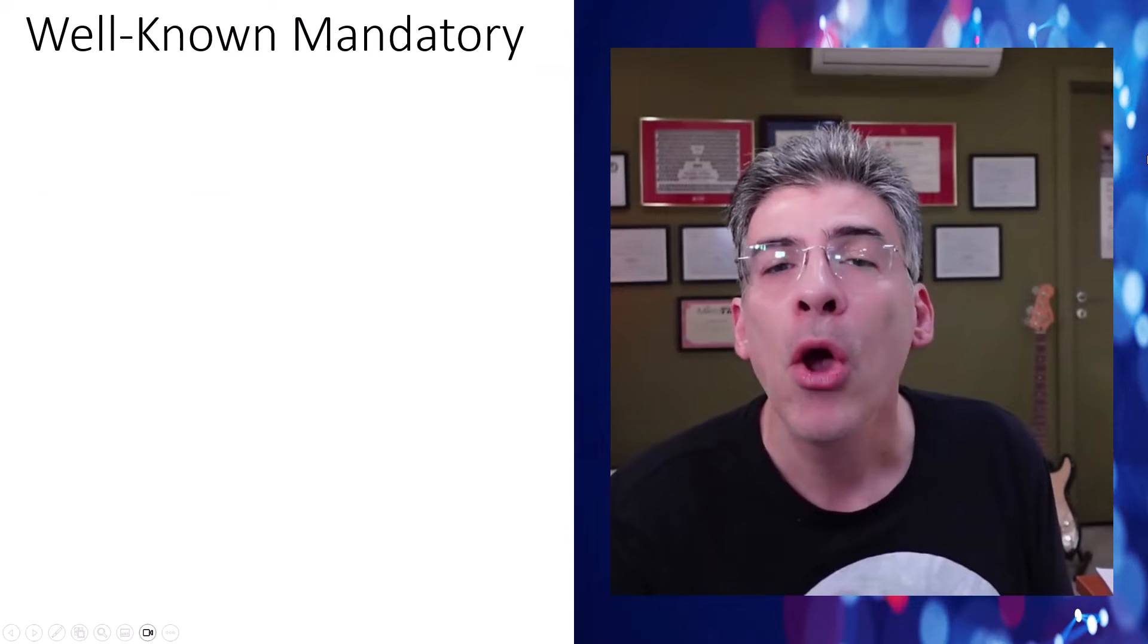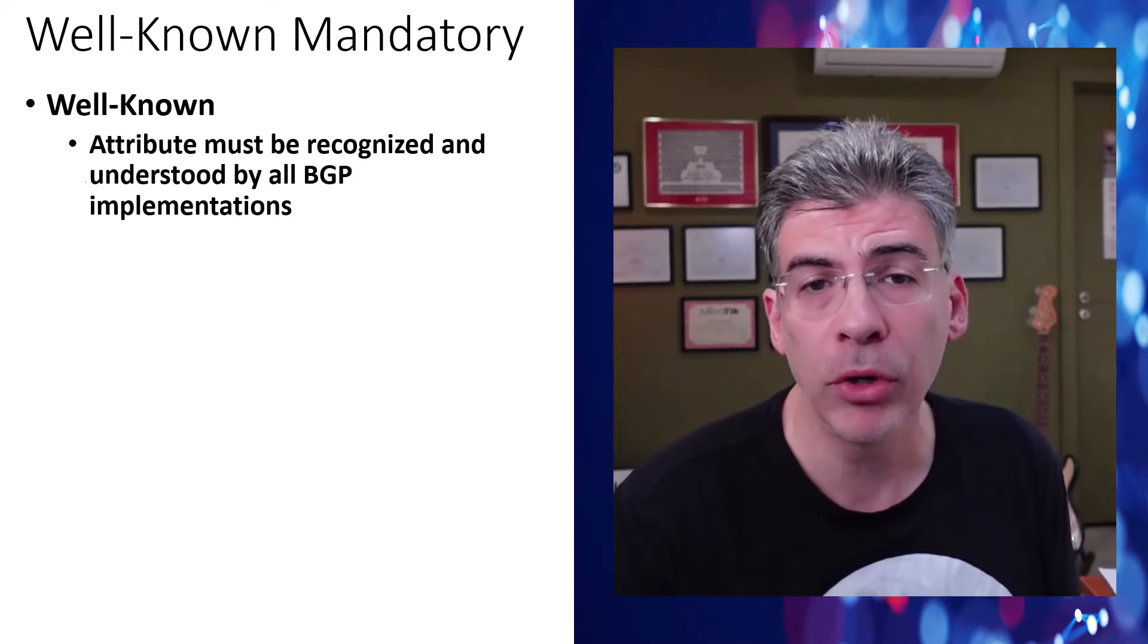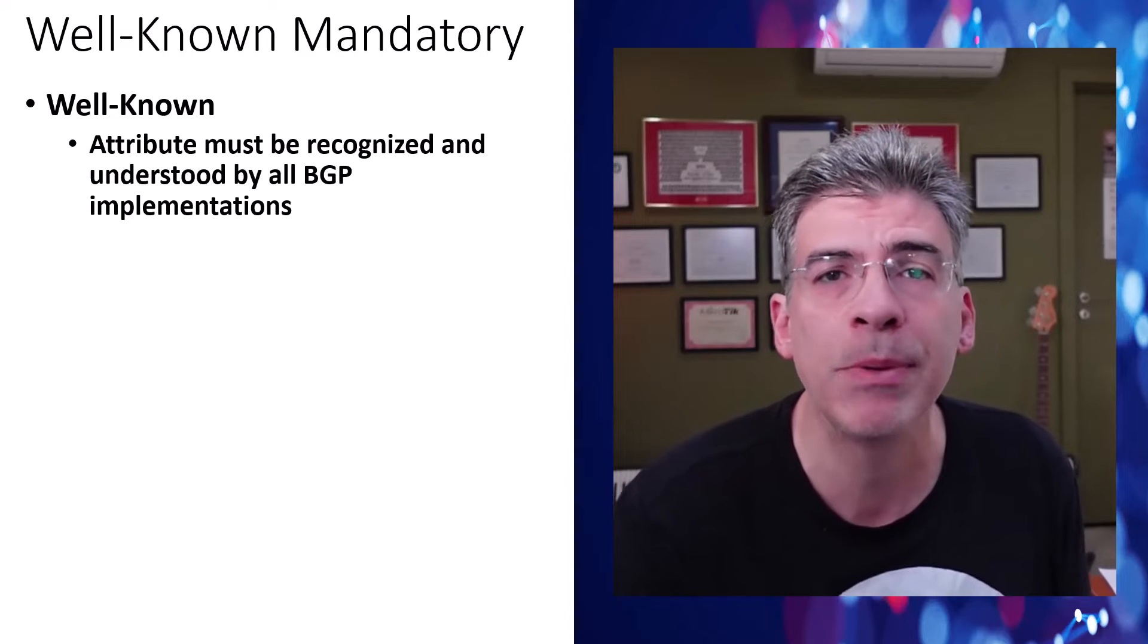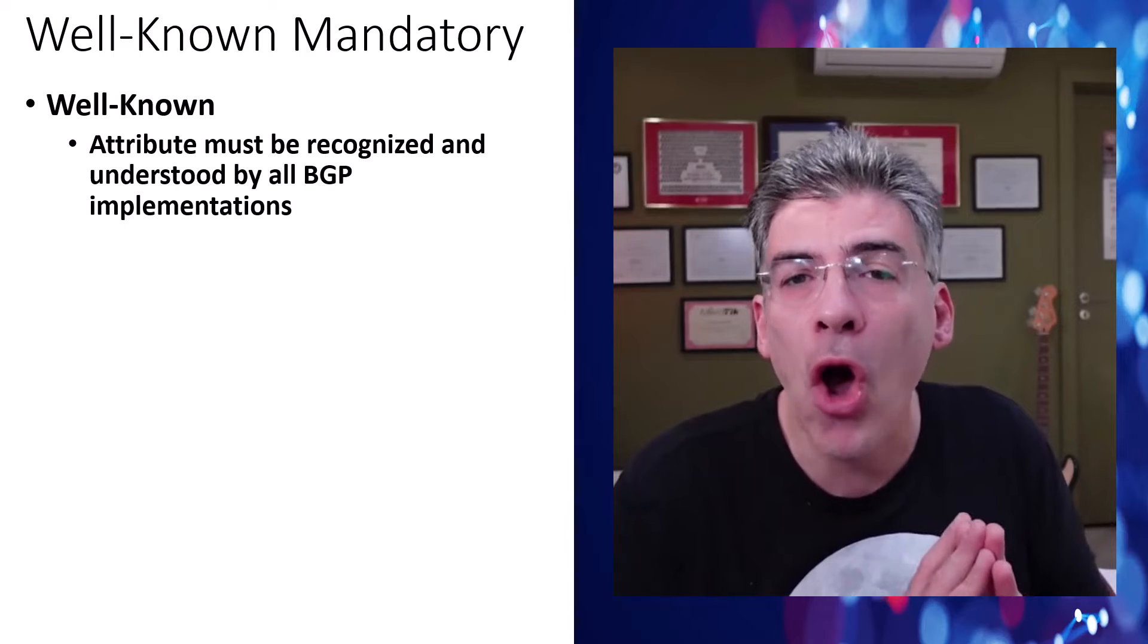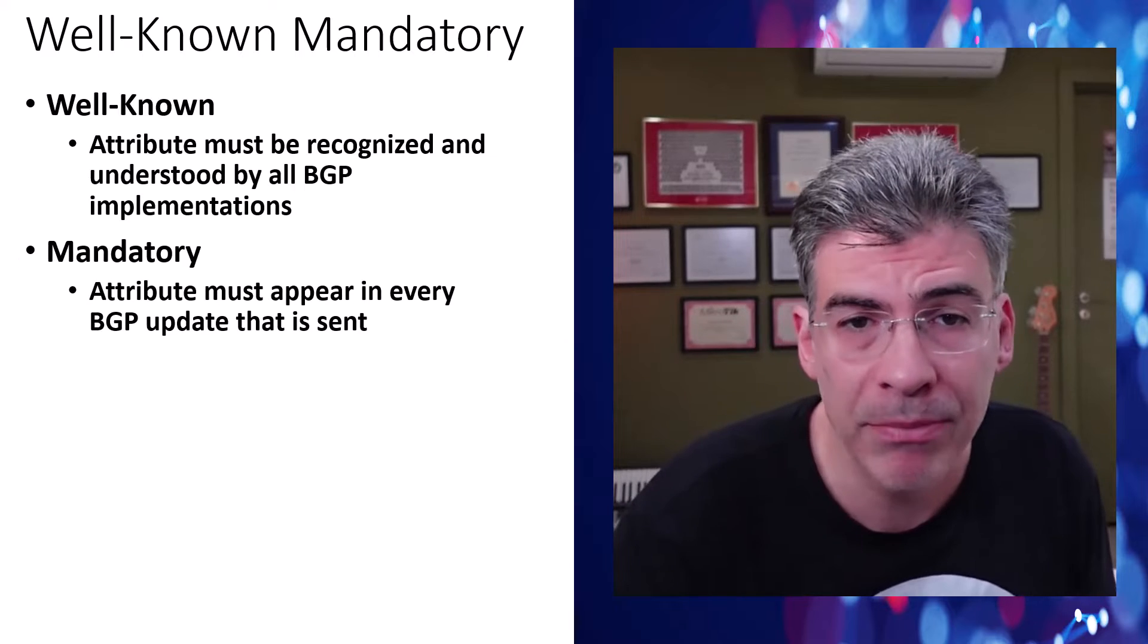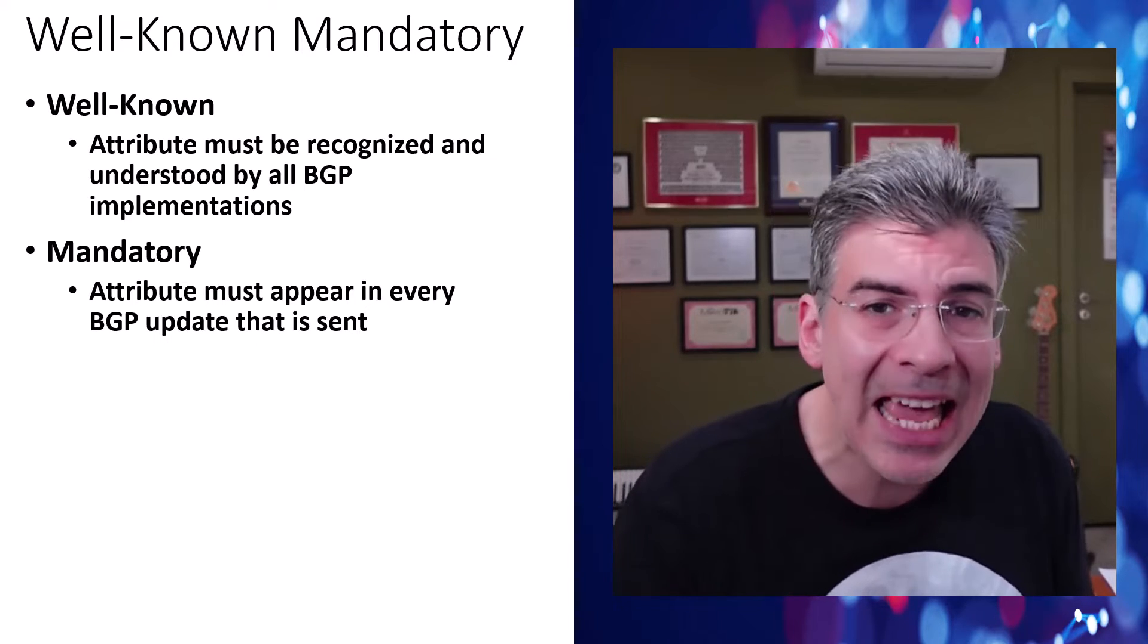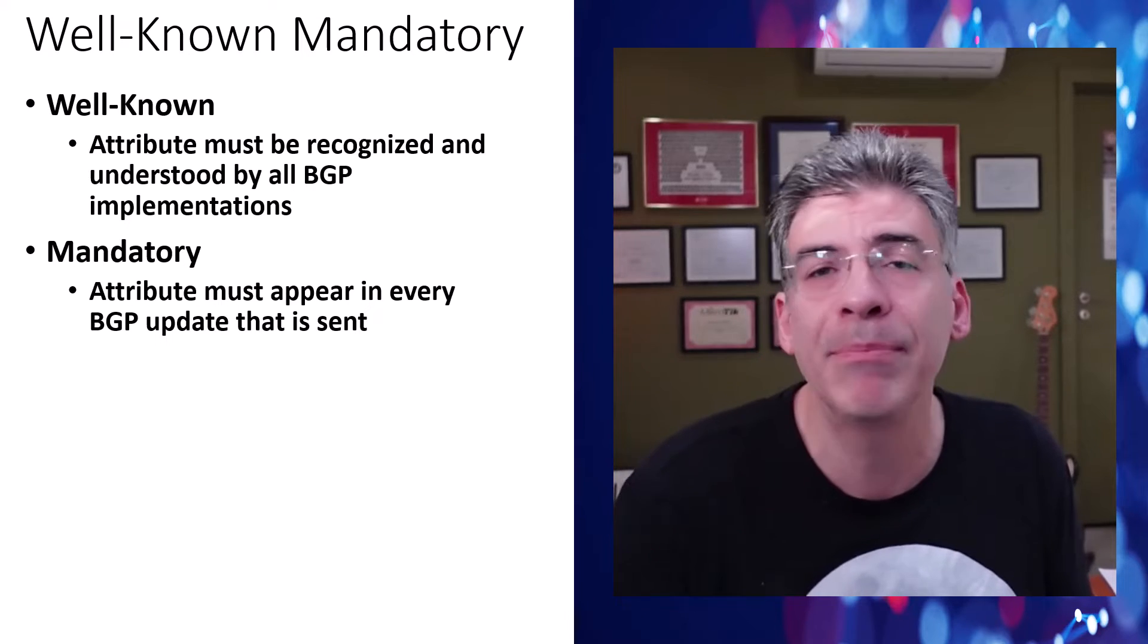Let's start off by looking at the well-known mandatory attributes first. What does this title mean? Well-known simply means that the attribute must be recognized and understood by all BGP implementations, regardless of the vendor or version of the BGP software. This ensures a consistent understanding and behavior across all the different types of BGP routers that may exist in a network. The term mandatory means that the attribute must appear in every BGP update that's sent. If a well-known mandatory attribute isn't contained within a BGP update, that update is considered corrupt and will not be processed. It'll simply be dropped.